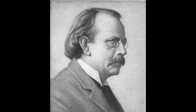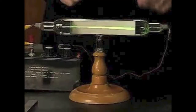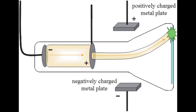A scientist named JJ Thomson liked to do experiments using cathode ray tubes. He noticed that when a charged plate was placed in close proximity to the cathode ray, the ray didn't travel in a straight line anymore. Thomson noticed that the beam bent towards the positive plate. Since opposite charges attract, he concluded that the particles must have a negative charge, and he named these particles electrons.